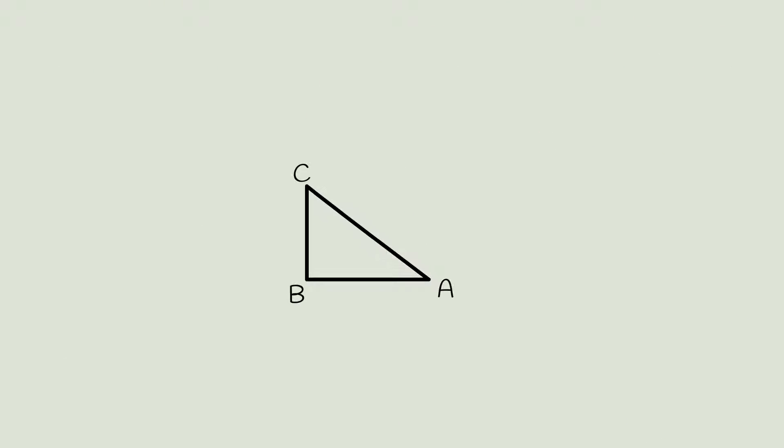Construct a triangle ABC with sides AB equal to 4 cm, BC equal to 3 cm, and AC equal to 5 cm. Observe that angle ABC is exactly 90 degrees.